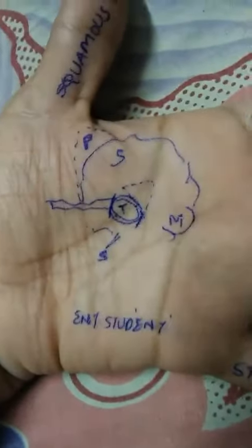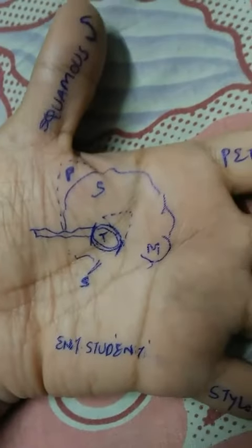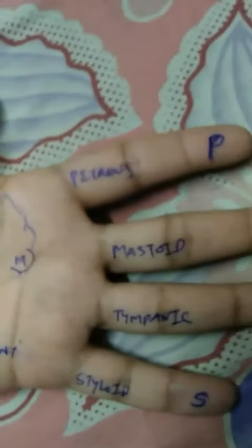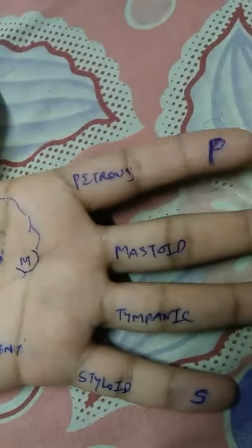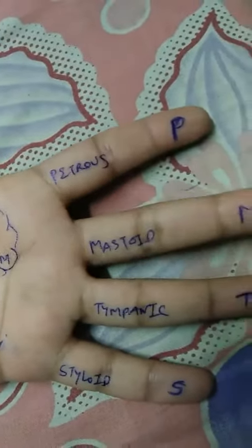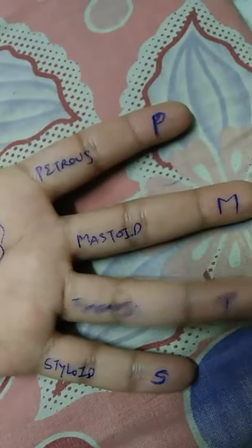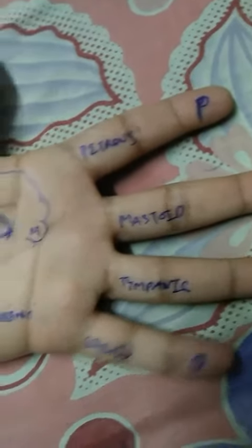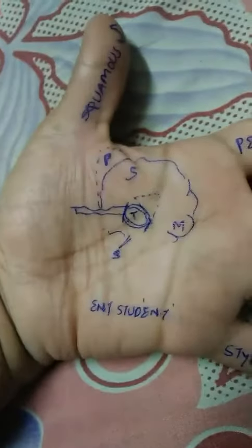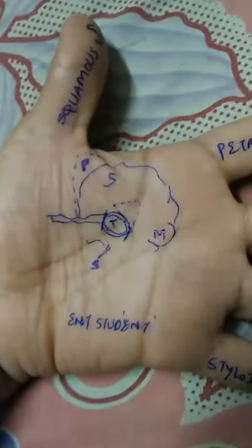So what are the parts of the temporal bone? S, P, M, T, S — squamous, petrous, mastoid, tympanic, styloid. So five parts of the temporal bone.